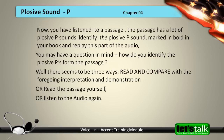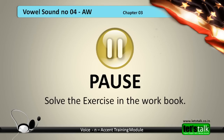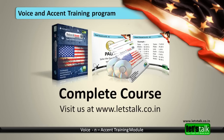Now you have listened to a passage with a lot of plosive P sounds. Identify the plosive P sounds marked in bold in your book and replay this part of the audio. There are three ways to identify the plosive P's from the passage: read and compare with the foregoing interpretation and demonstration, read the passage yourself, or listen to the audio again. Now pause the program and solve the exercises in your workbook. For a complete course on voice and accent, visit our website at letstalk.company.in.